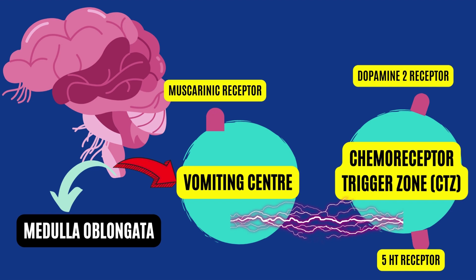The CTZ has a number of different receptors, including dopamine, serotonin, acetylcholine, opioids, and substance P. Each of these receptors activates the pathways that cause nausea and vomiting. When the CTZ is stimulated, vomiting occurs.